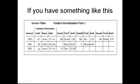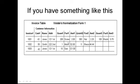We used to have 1001 with three parts — screw, nut, and washer, or whatever that means. Invoice 1002 has two products — motor and brace. But as we see now, we have one part per row. Each row has one part, one product.